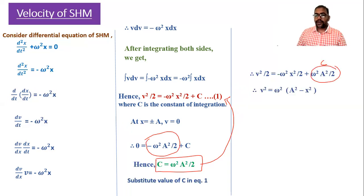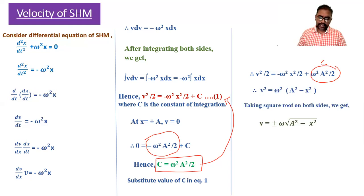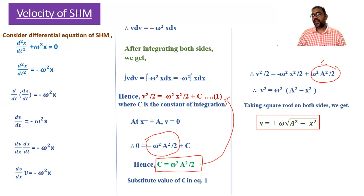Taking ω²/2 as a common factor from the right-hand side, the 2s cancel and we get v² = ω²(a² − x²). Taking the square root of both sides gives the expression for velocity in SHM: v = ±ω√(a² − x²).